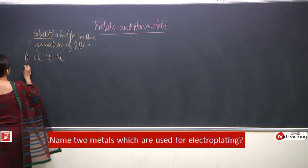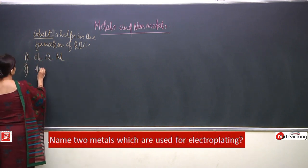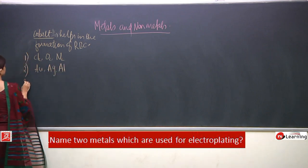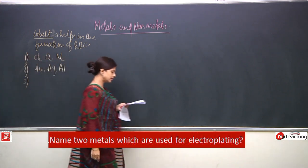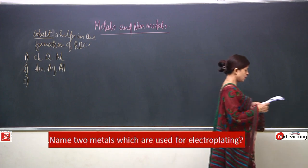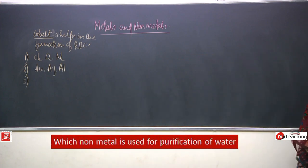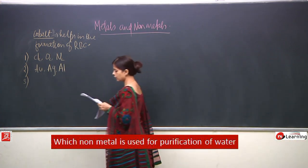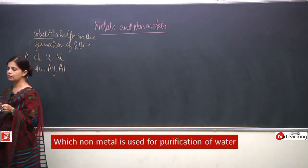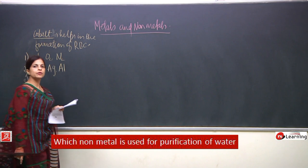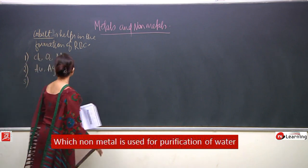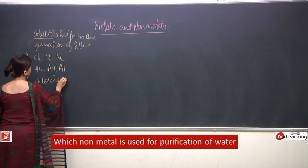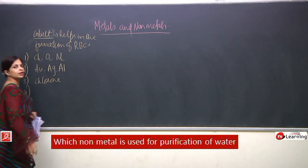For electroplating, examples include gold, silver, and aluminium. The next question: which non-metal is used for purification of water? It is chlorine — chlorine is used for purification of water.